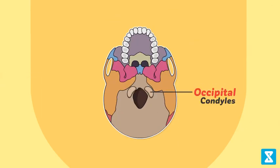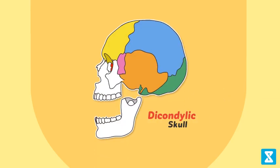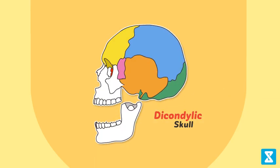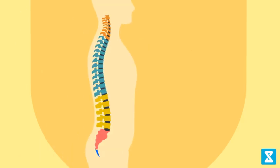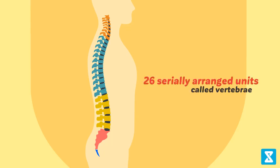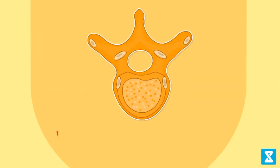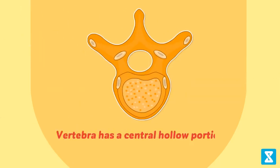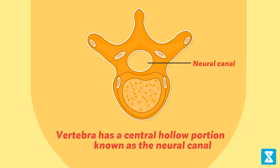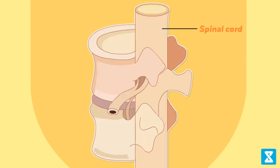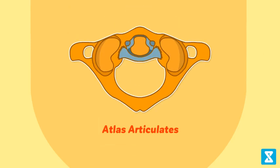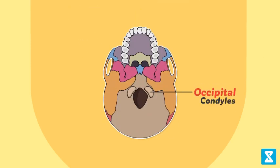The vertebral column of a human body is formed by 26 serially arranged units called vertebrae, and it is dorsally placed. Each vertebra has a central hollow portion known as the neural canal, through which the spinal cord passes. The first vertebra, known as the Atlas, articulates with the occipital condyles.